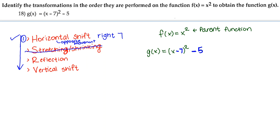The third possible transformation is reflection. Reflection refers to whether you have a negative next to the x inside the parentheses, or a negative outside the parentheses — that would indicate reflecting over the y-axis or the x-axis. But we don't have a negative in either place, so we can disregard reflection as well.